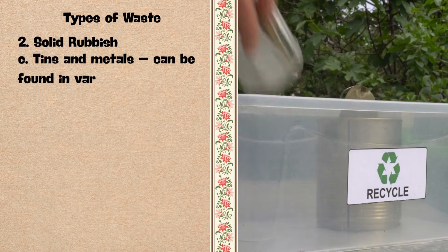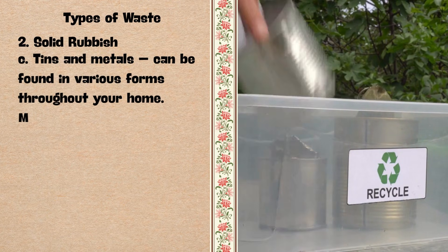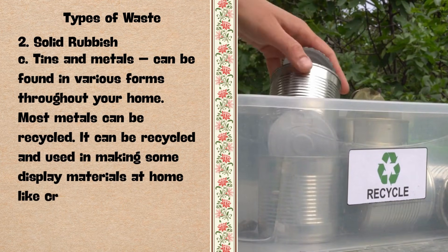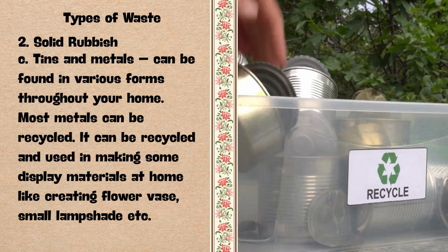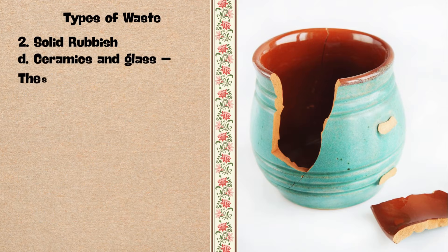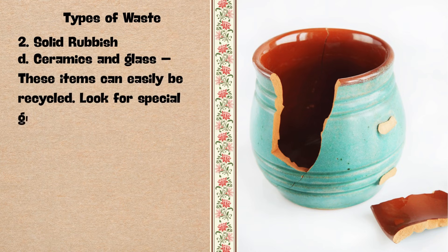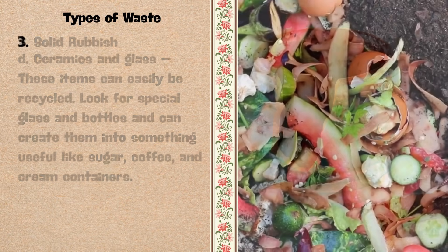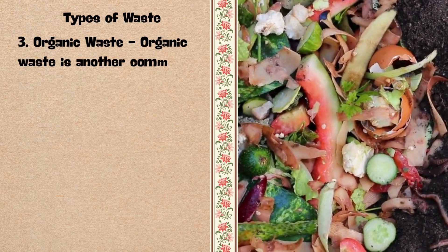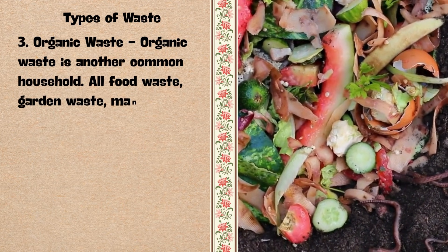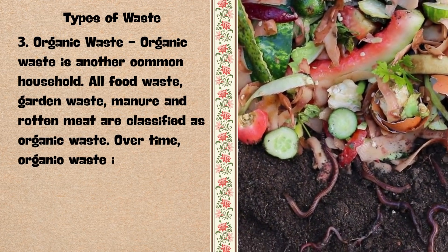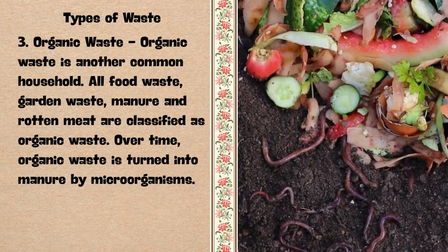Third, tins and metals — found in various forms throughout your home. Most metals can be recycled and used in making display materials at home, like creating a flower vase or small lampshade. Fourth, ceramics and glass — these items can easily be recycled into something useful like sugar, coffee, and cream containers. 3. Organic waste — all food waste, garden waste, manure, and rotten meat are classified as organic waste. Over time, organic waste is turned into manure by microorganisms.